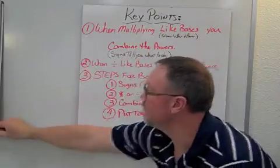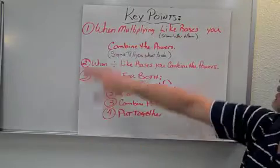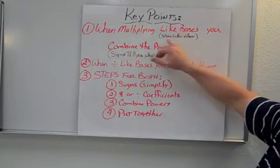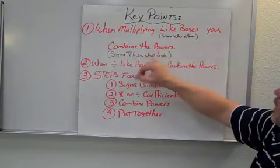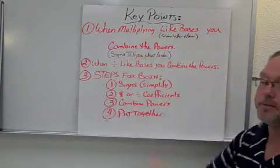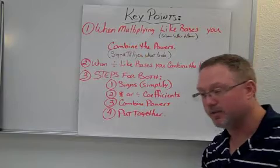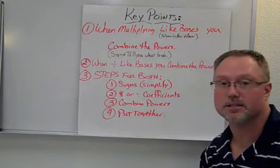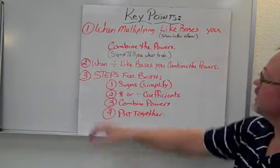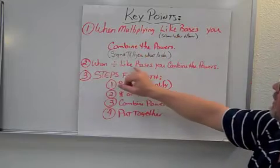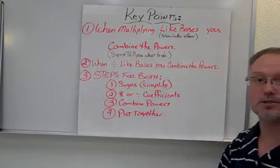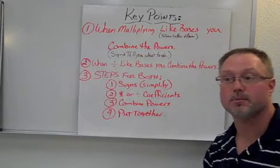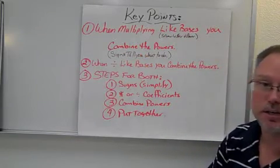So some key points to figure, to lead with. When you're multiplying like bases, meaning the same letter and power, you combine the powers, tells you what to do. So the combining part, two negatives make. If I have same signs I add, different signs I subtract. Large number carries a sign. Two, when dividing like bases, you combine the powers. So again, in this case, you're going to be subtracting your powers. So we may have to simplify some signs if we get into negatives.